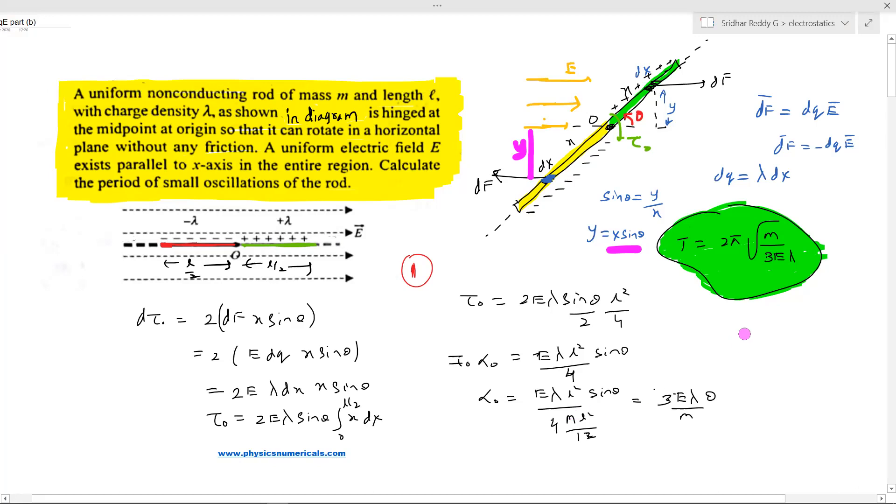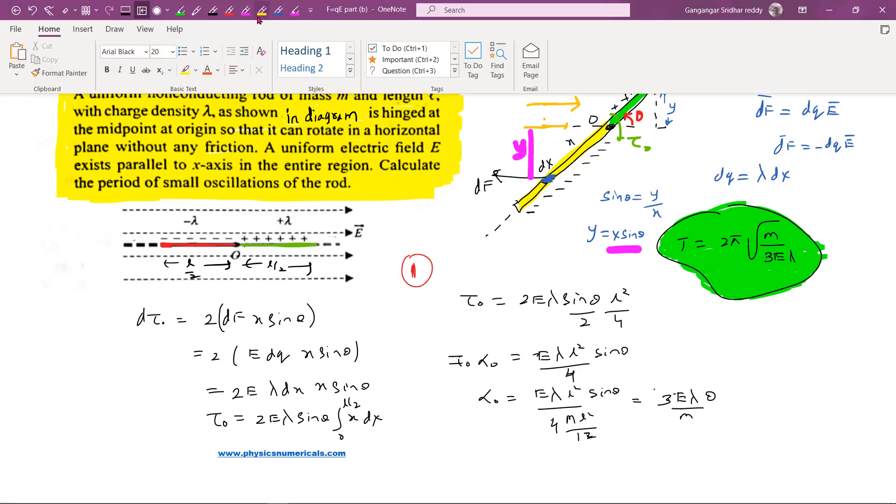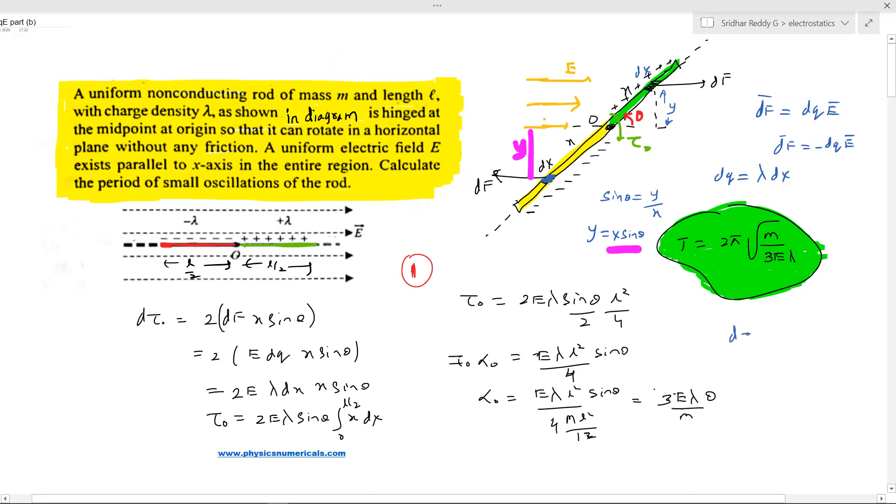How am I writing this directly? What is the basic idea? dτ should be equal to df into y. What is y? Let me change the nib of the pen, it looks very odd writing such bold letters. dτ should be equal to df into y. What about this distance? This should be y again, the same. This will be θ, so dτ = df × x sin θ.